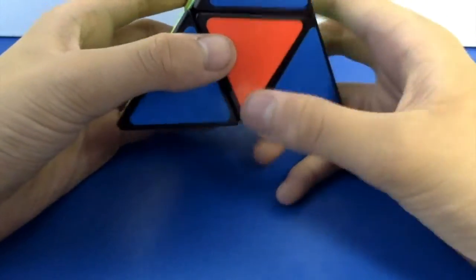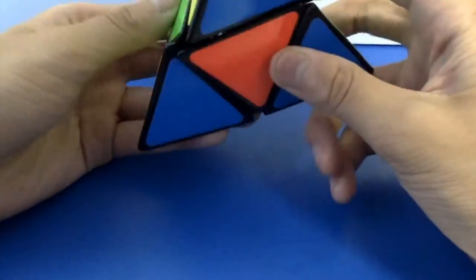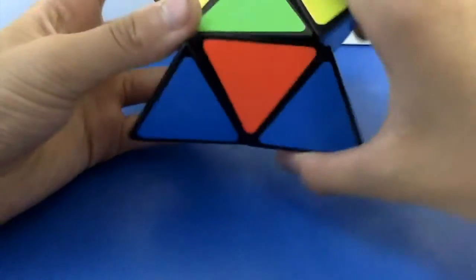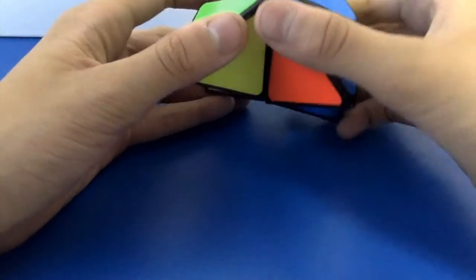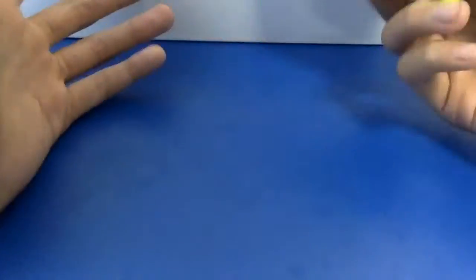And this one, the opposite to this one is on the bottom, is at the bottom. And now you use the same trick, but this time it's U2, and then go back. Now you solved it.